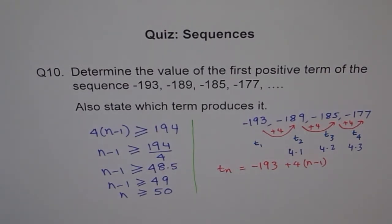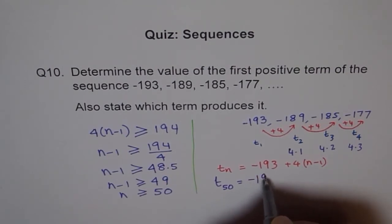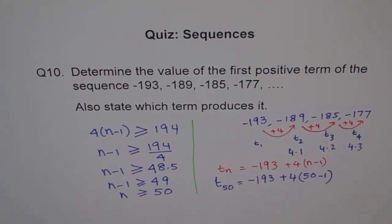So that is what it is. Now we should check it. We got also state which term produces N equals to 50, but let us check it. When I write T50, I get minus 193 plus 4 times 50 minus 1. Let us use calculator and then figure it out.